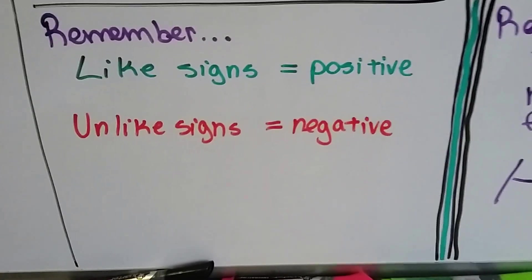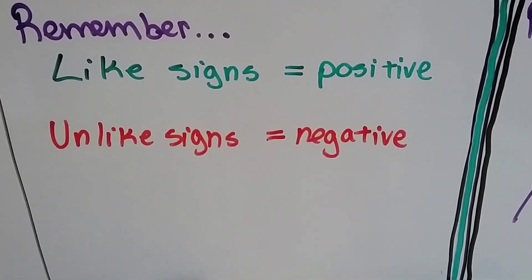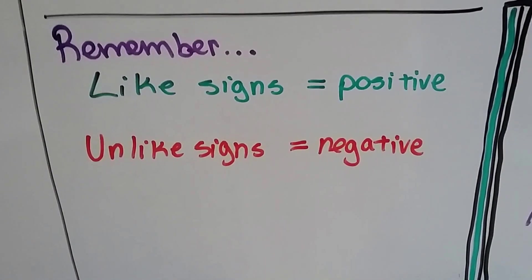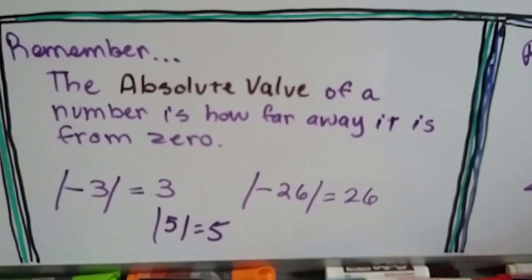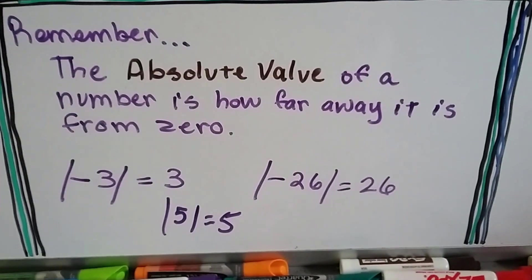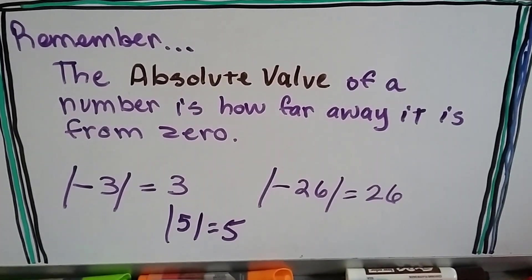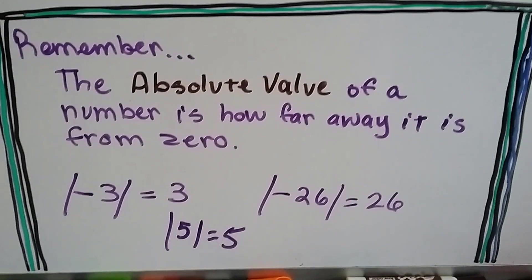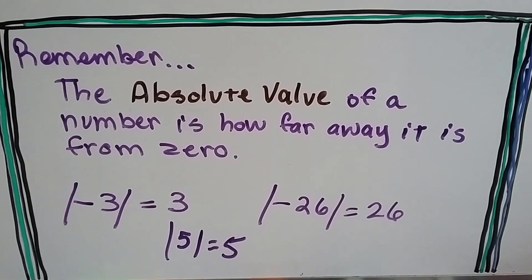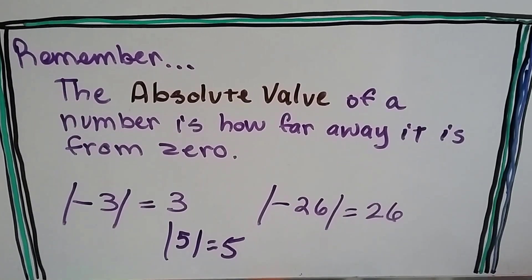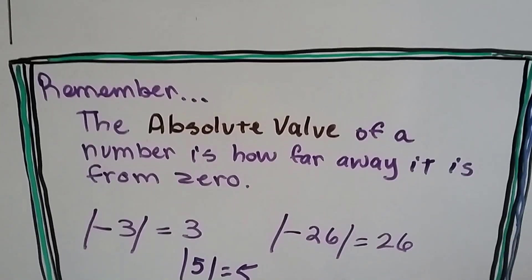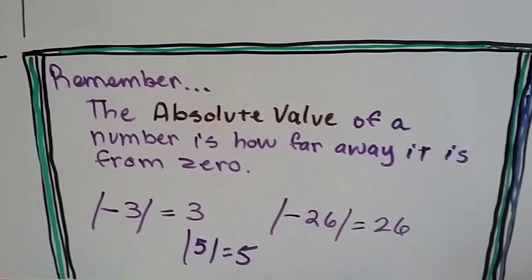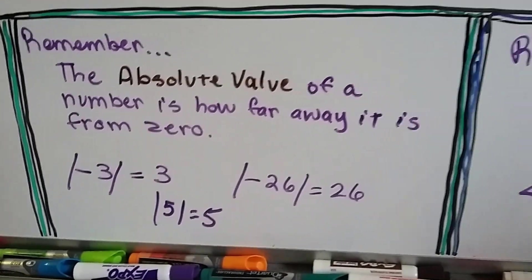So remember: like signs means a positive quotient, and unlike signs means a negative quotient or product. Also remember that the absolute value of a number is how far away it is from zero. The absolute value of negative 3 is 3, the absolute value of 5 is 5, and the absolute value of negative 26 is 26. Those slash lines mean absolute value — just take away the lines and the sign to get the absolute value.